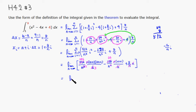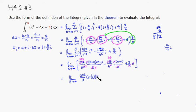We still need to take the limit as n approaches infinity. We have 256/3, then for the (n+1)/n and (2n+1)/n factors: n/n = 1 and 1/n → 0, so those become 1 and 2. For the i-term we have -64 with n/n = 1 and 1/n → 0.